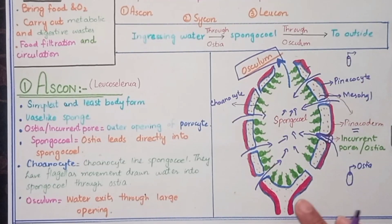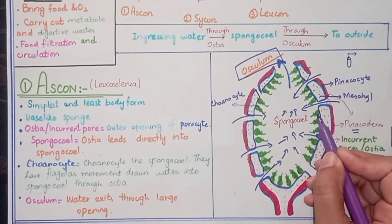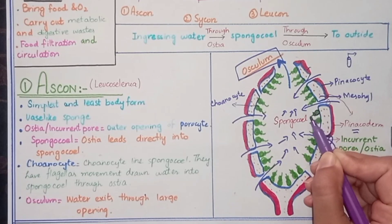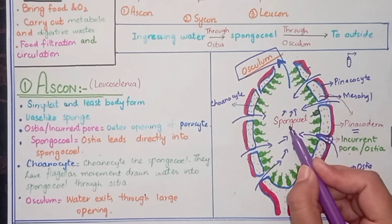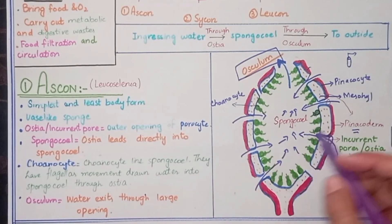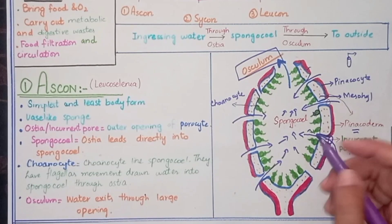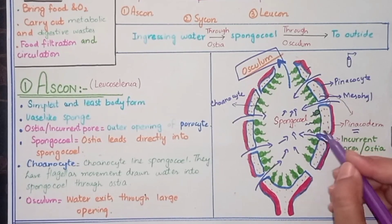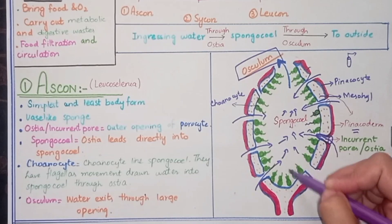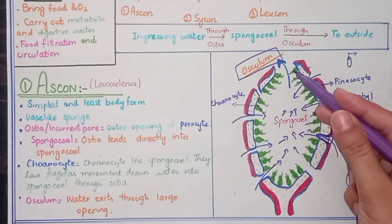In the Ascon body form, flagellated structures called Choanocytes are present along the Spongocoel, and these are responsible for the water current mechanism. Their flagella beat, and due to the beating of the flagella, water moves further forward through the sponge.